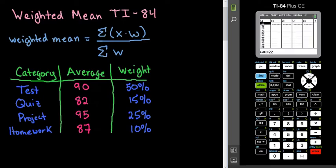We do a lot with stats in the lists. If you have information in here, you can clear it out by hitting the clear button. So I'm going to clear this data, and then I'm going to put these values in. So I'm going to put in the 90, 82, 95, 87, and then I'm going to go to the next list.